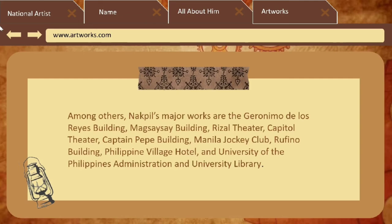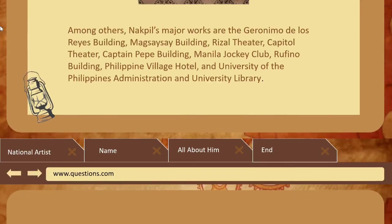Among others, Nacpil's major works are the Geronimo de los Reyes Building, Magsaysay Building, Rizal Theatre, Capital Theatre, Captain Pepe Building, Manila Jockey Club, Rufino Building, Philippine Village Hotel, and the University of the Philippines Administration and University Library.